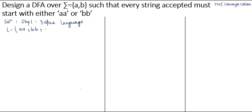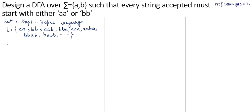Next we can have strings like AAB, BBA, AAA, AABA, BBB, and so on. The language contains all strings that either start with AA or start with BB. The language is not finite.